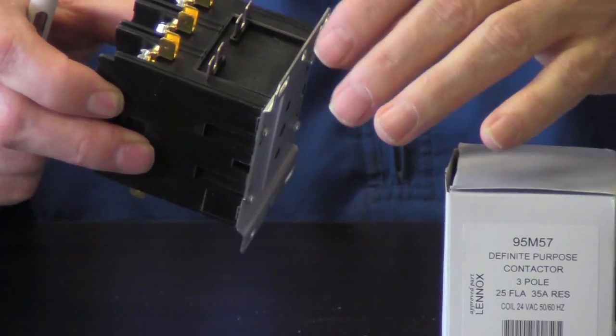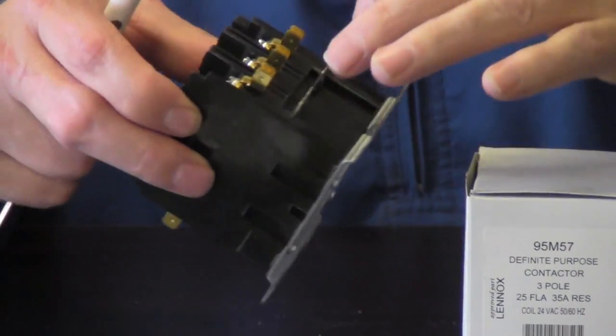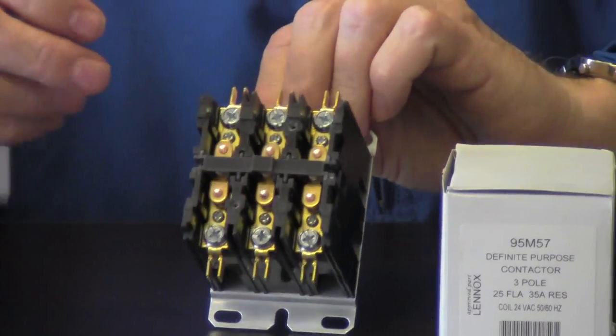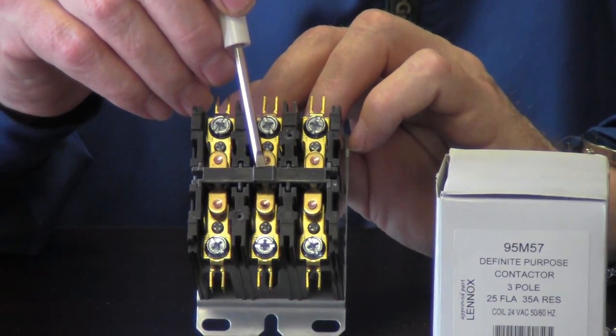This is what once our thermostat makes a demand for cooling it will energize these poles here which then in return will pull in our contactor and close our switch.